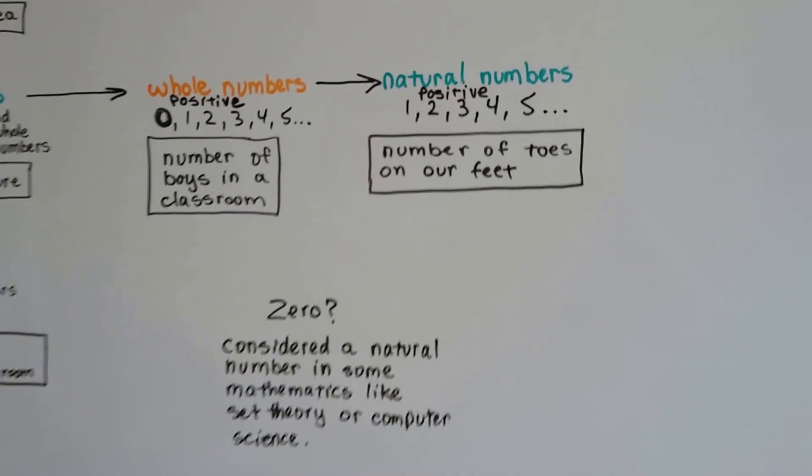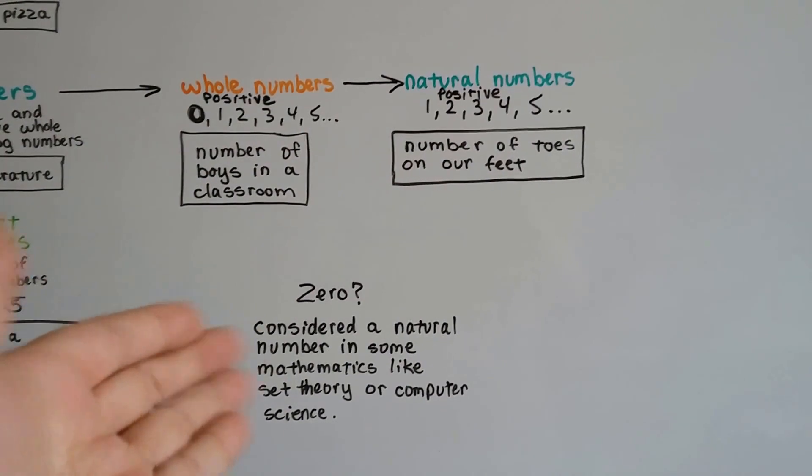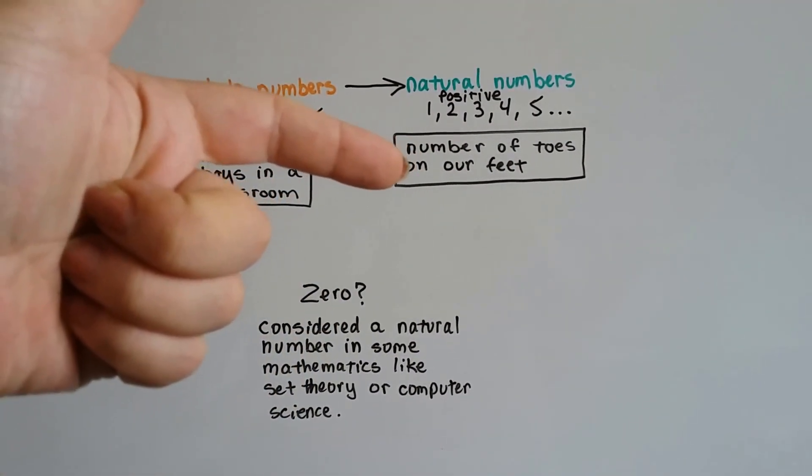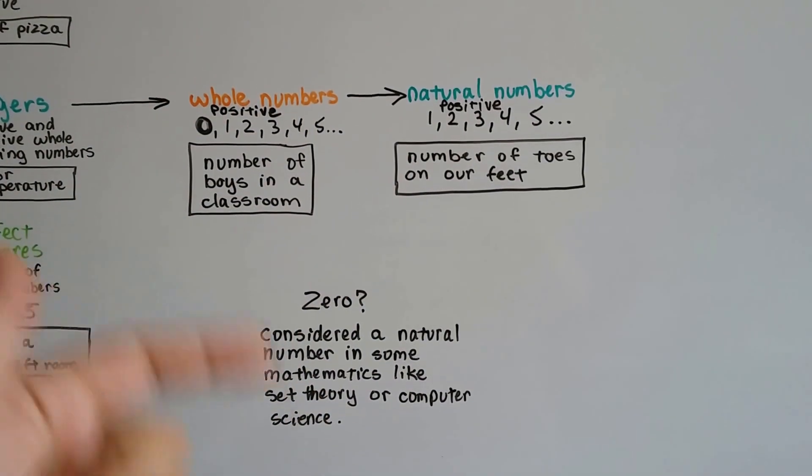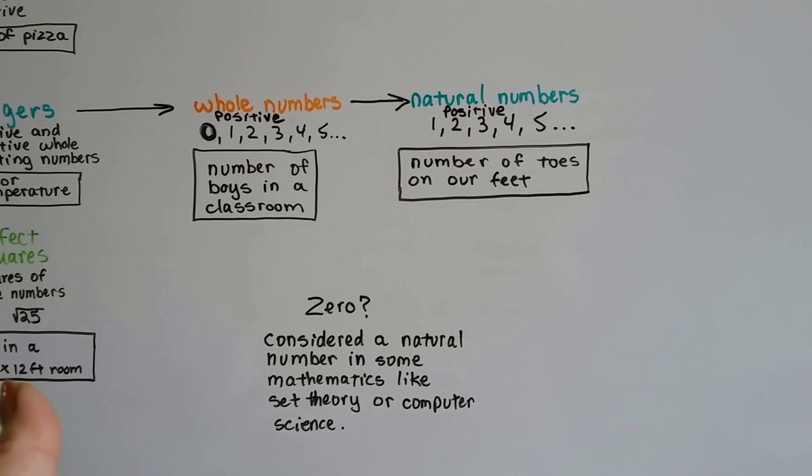Now there's some debate over where it belongs, that zero. It's considered a natural number in some mathematics. Some mathematics puts it over here, like in set theory or computer science. But most mathematicians put it here with the whole numbers.